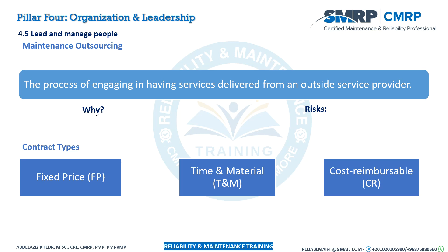The final topic is contracts and outsourcing. Outsourcing maintenance contracts or resources helps reduce risk and control costs — for example, reducing insurance costs and avoiding the need to hire highly paid specialists full-time; instead, contracting them for one or two days per month. However, outsourced staff may lack organizational loyalty and responsiveness. Contract types include fixed-price, time and material, and cost-plus contracts, applicable to people, materials, or project management.